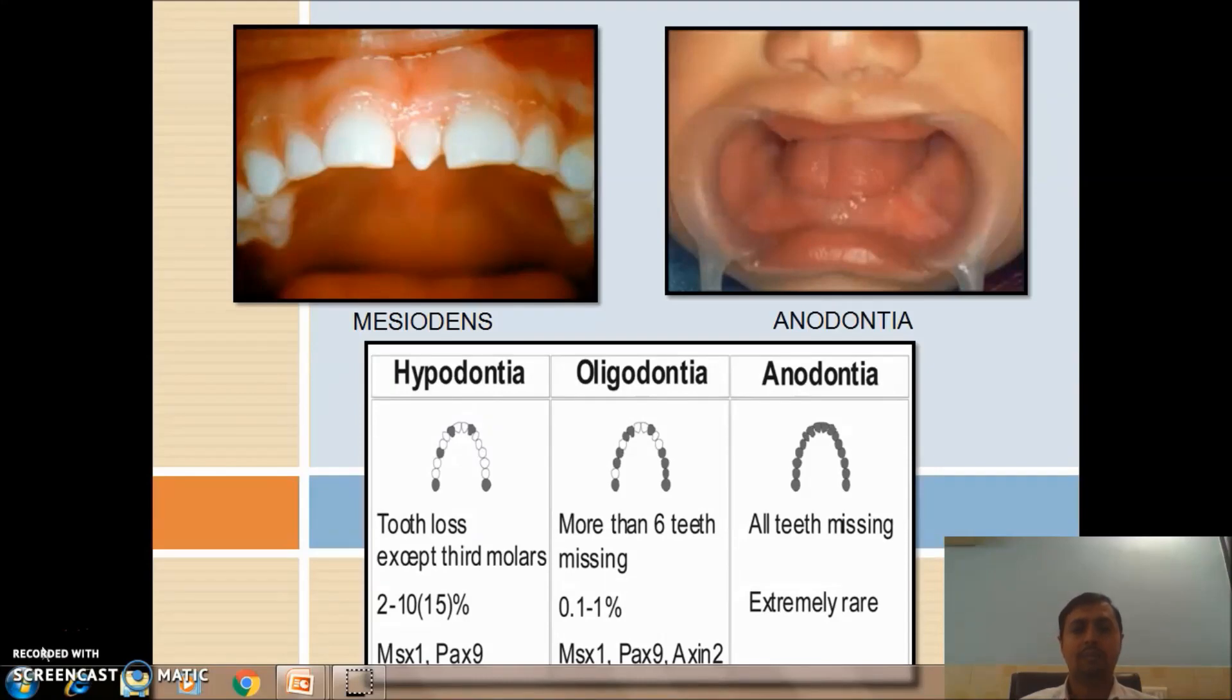In hyperdontia, I have told it can be mesiodens, paramolar, peridens, and distomolar. What is mesiodens? If a supernumerary tooth is present in the midline between two central incisors, it is known as mesiodens.